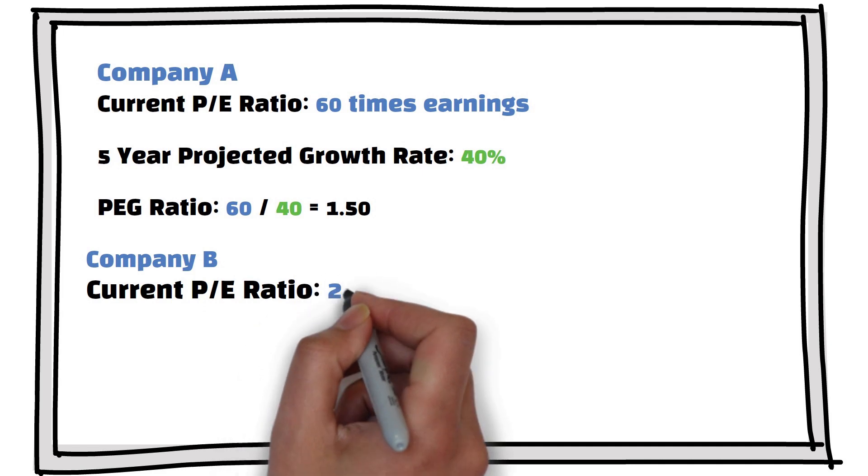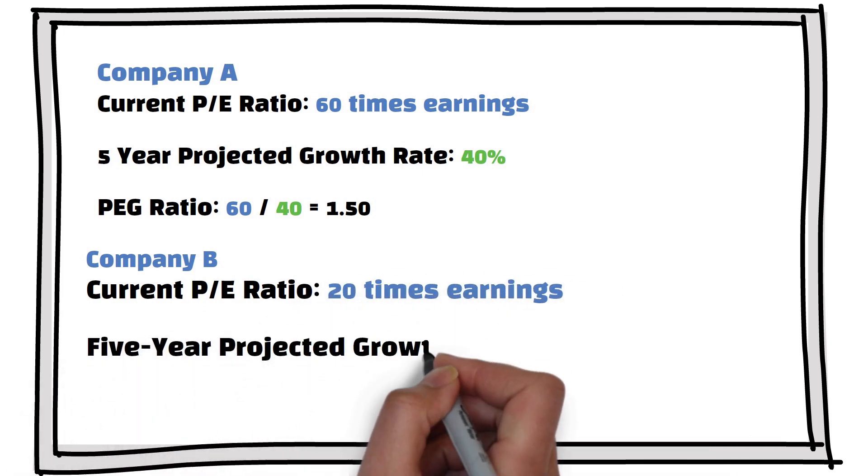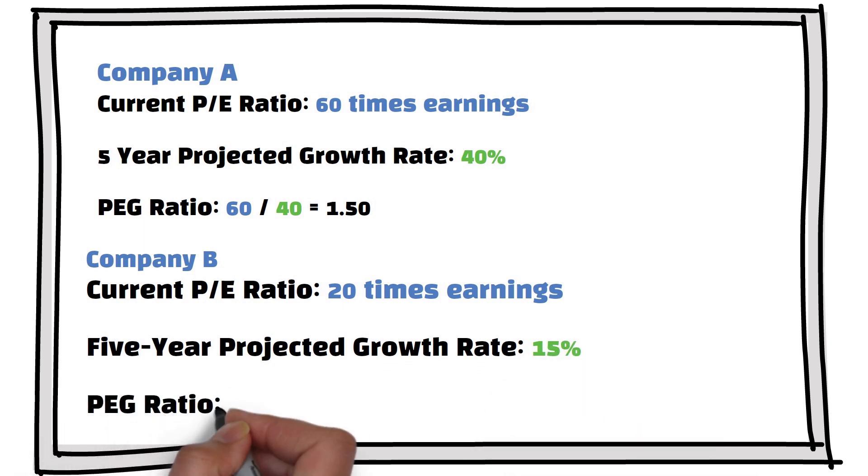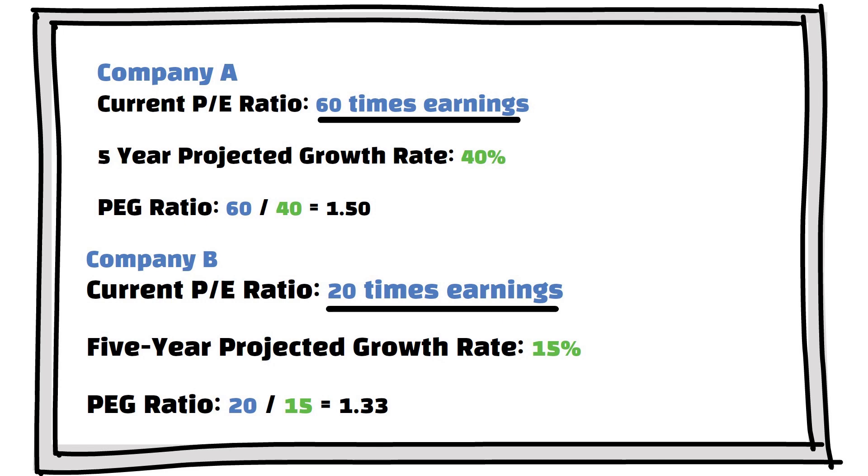Company B, current P-E ratio 20 times earnings, 5-year projected growth rate 15%, P-E-G ratio 20 over 15 equals 1.33. At first glance, if you judge them on just the P-E ratio, company A looks overvalued as the P-E is 60, which is triple company B.